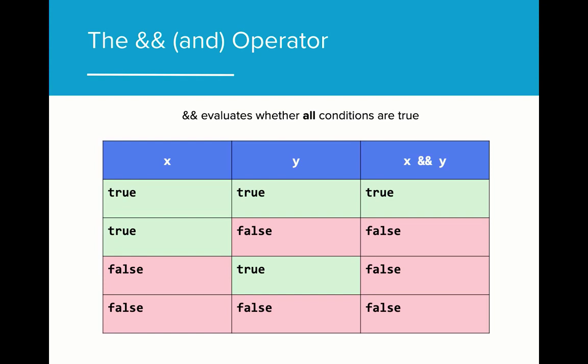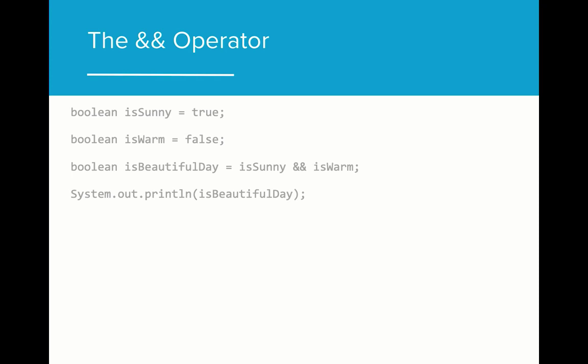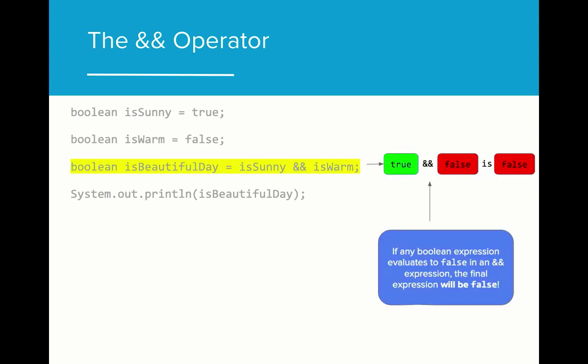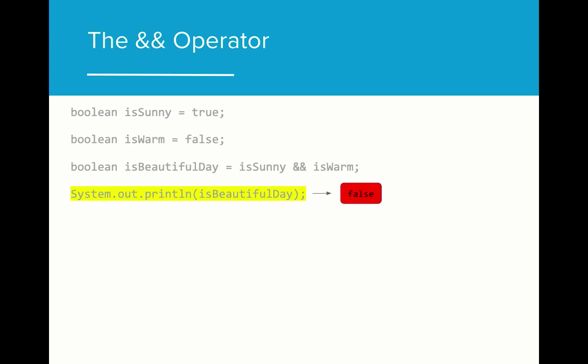The AND operator evaluates whether all conditions in an expression are true. If any of the statements evaluate to false, then the final Boolean expression will be false. You may want to study this table in a bit more depth on your own. The Boolean variable isBeautifulDay evaluates the result of isSunny and isWarm. It can only be a beautiful day if it is sunny and it is warm. When we evaluate isBeautifulDay, the final expression will be false because isWarm is false. If any Boolean expression evaluates to false in an AND expression, the final expression will evaluate to false. When we print the value of isBeautifulDay, the result will be false.